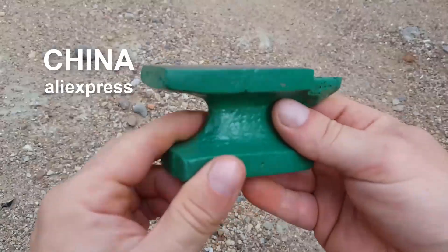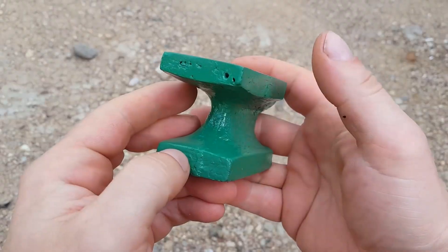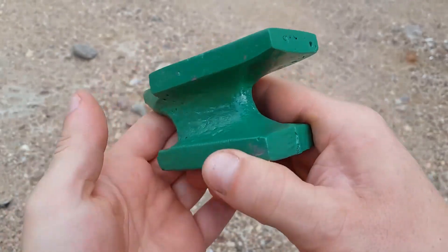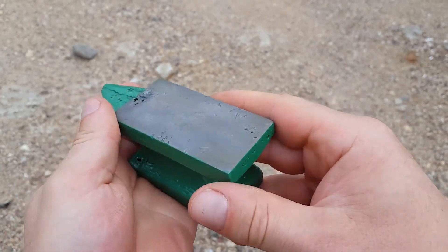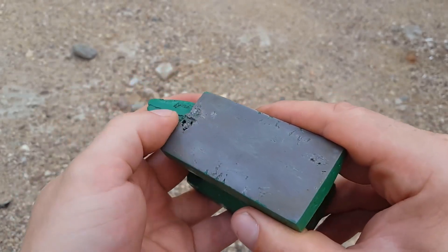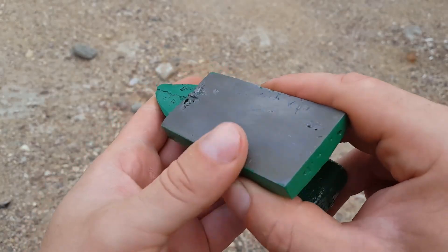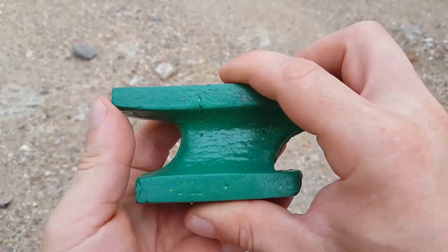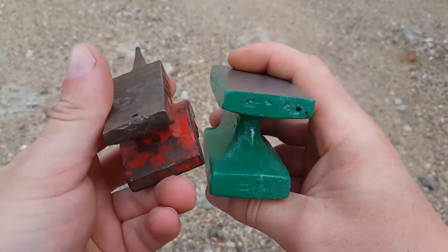And we have an anvil from Aliexpress. Here, the casting quality immediately catches one's eye. Or rather, the absence of this very quality. You can see a large number of craters and pores. By the way, there is a high probability that this anvil is Chinese. It may be made not of steel, but of cast iron. The Chinese often like to make something like this out of cast iron, where steel should be used.